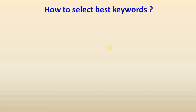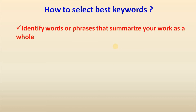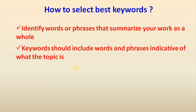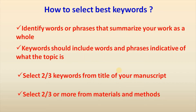Now, how to select the best keywords? In order to select the best keywords, we need to identify words or phrases that summarize our work as a whole. These keywords should include words or phrases indicative of what the topic is. The easy rule is: select 2 to 3 keywords from the title of your manuscript, then select 2 to 3 or more keywords based on journal requirements from the materials or methods section.